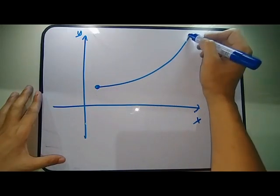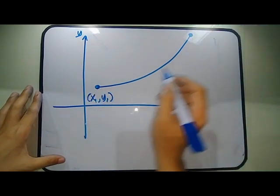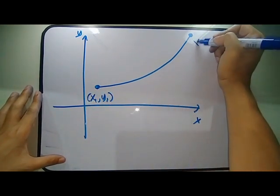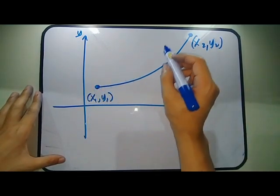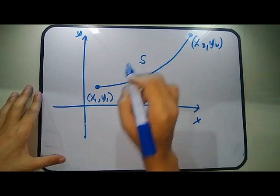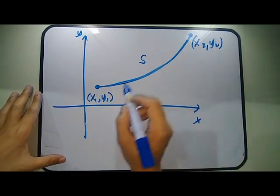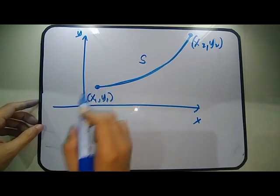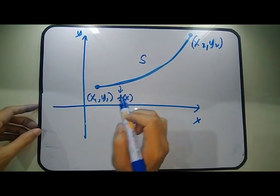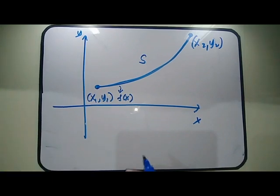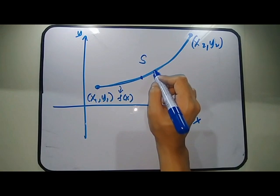Suppose we have a curve and we are going to determine the length of the curve from a certain point on that curve. Let's say this curve is represented by S. The first step is to get a differential strip — let's call it differential S, or DS.